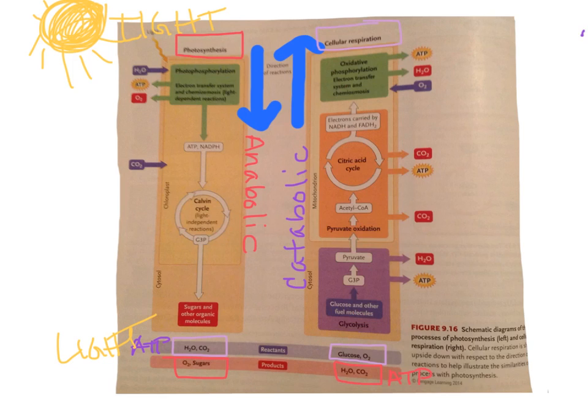In cellular respiration, our reactants are glucose and oxygen. Glucose in, oxygen in. What comes out? Water, carbon dioxide, and ATP.